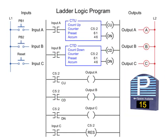With both the up and down counters addressed to the same counter file, the preset and accumulated values are the same. When the accumulated value reaches the preset value, the counter done bit enables output C and full is displayed.